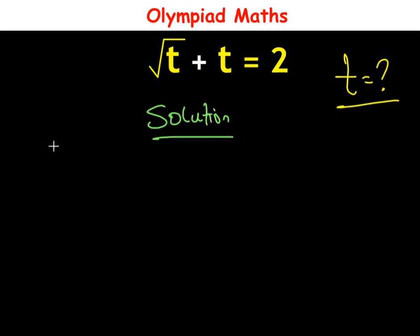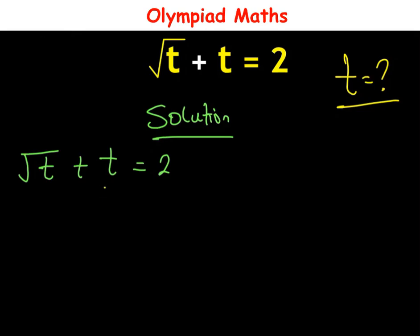The question is √t + t = 2. First we are going to make √t the subject of the formula. To do so we are going to move +t over to the other side, so this becomes √t = 2 - t.